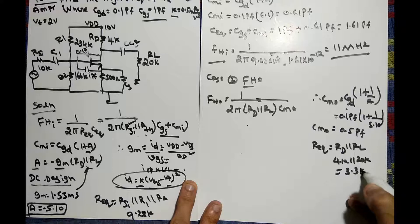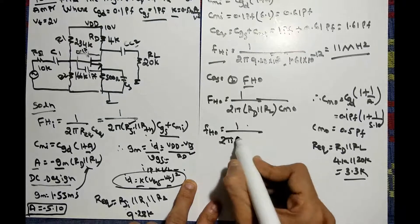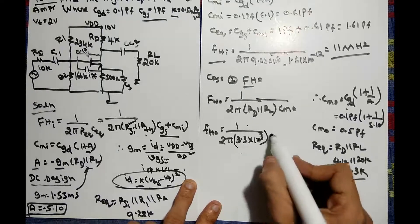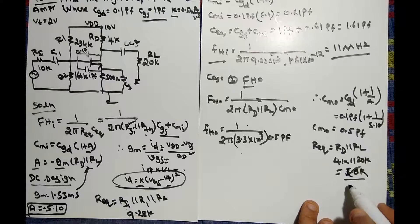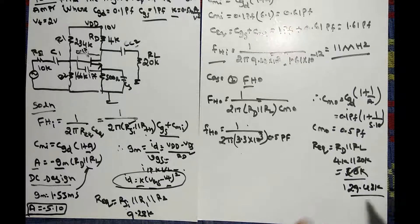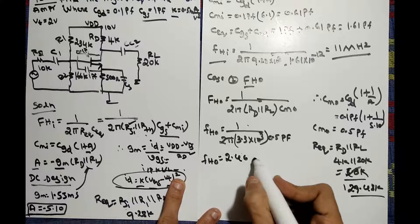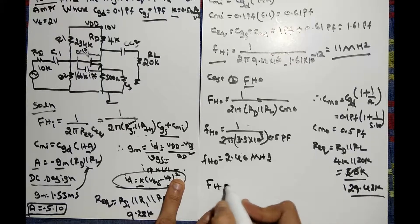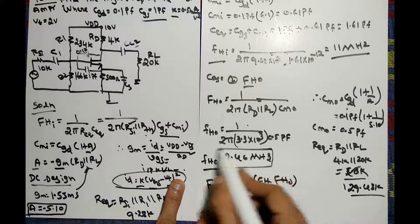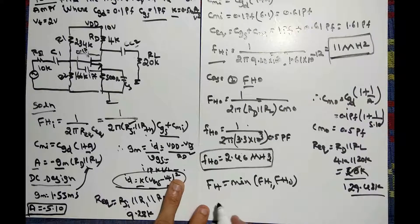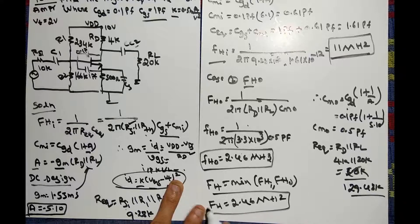Note the correction: RD parallel to RL does not give 3.3kΩ — the correct R_equivalent is 129.48kΩ. Cross-verify these answers. Using FHO equals 1 divided by 2π times 129.48×10³ times 0.5 picofarad, FHO comes out to approximately 2.46 MHz. FH is defined as the minimum of FHI and FHO — FHI is 11 MHz and FHO is 2.46 MHz, so FH equals 2.46 MHz.